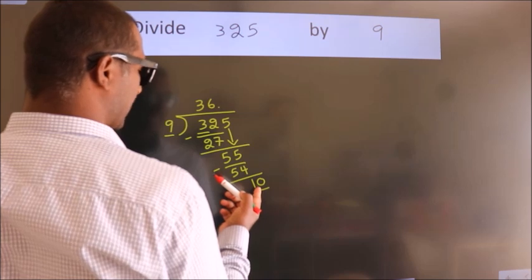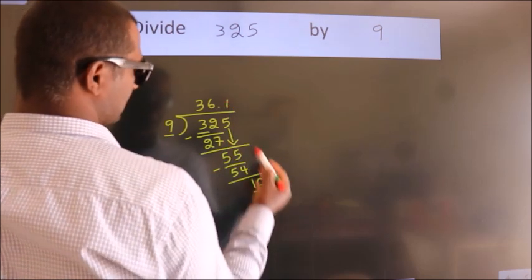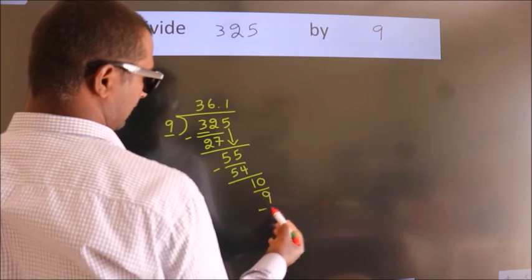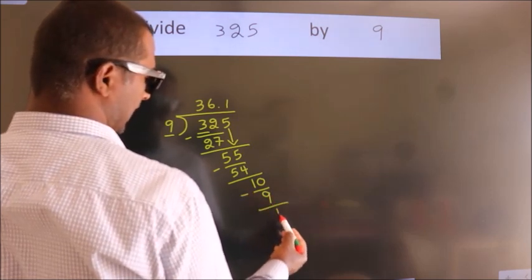A number close to 10 in the 9 table is 9 ones, 9. Now we subtract. We get 1.